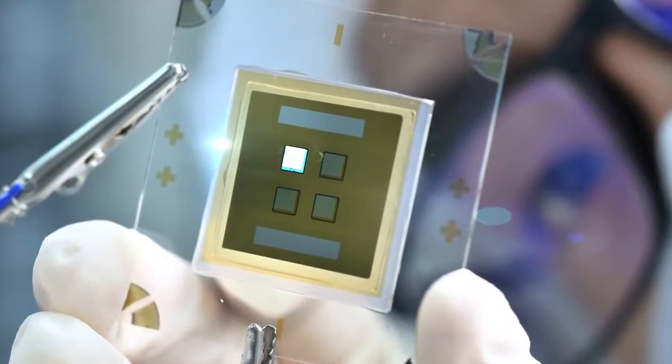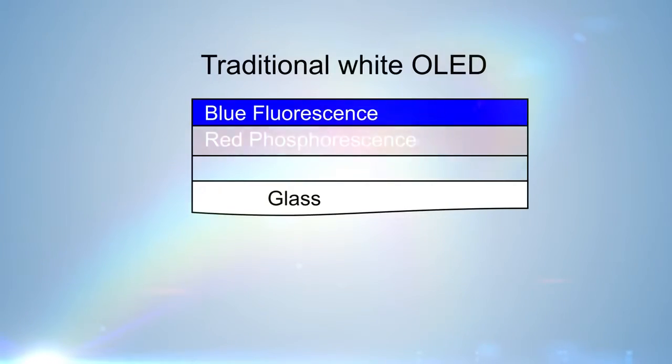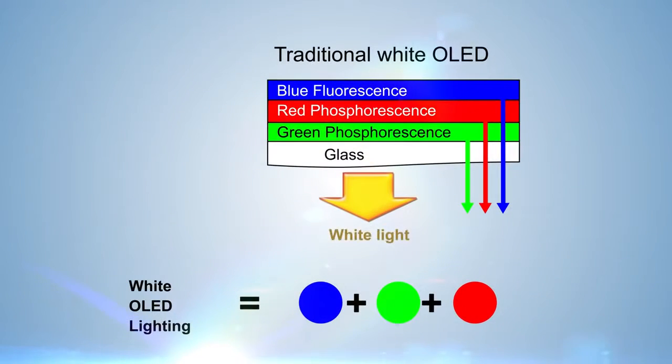The current OLED unit consists of a stacked structure with thin films. By stacking blue, red and green organic light emitting materials together, the lighting device can produce white light.